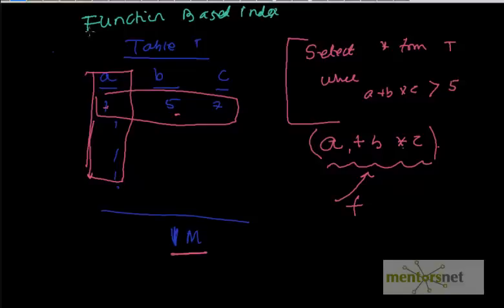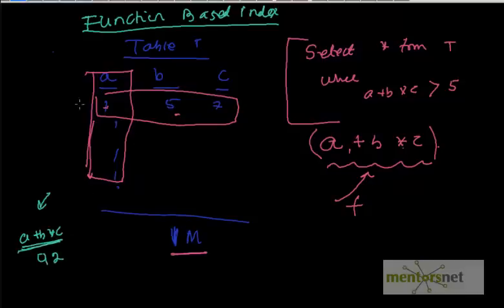So here in this function based index, whenever we are going to create this index, we are going to compute this value and pre-store it. So that means the index will contain A plus B into C and then what is the value of this, it is going to compute 1 plus 5 is 6 into 7 is 42. And then whatever this row ID is going to store here.